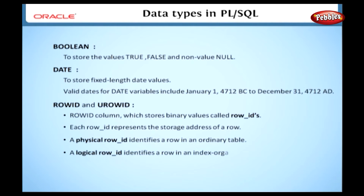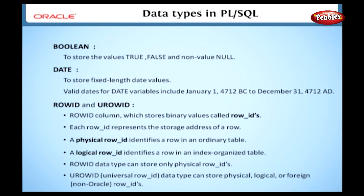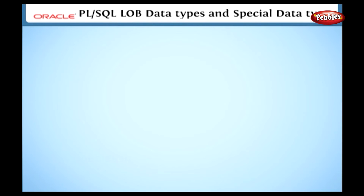RowID and UROWID. Generally, in an Oracle database, all data is stored as rows. Internally, every database table has a row ID column, which stores binary values called row IDs. Each row ID represents the storage address of a row. A physical row ID identifies a row in an ordinary table. A logical row ID identifies a row in an index organized table. Now we move on to PL/SQL LOB data types and special data types.